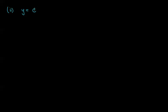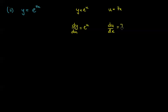Let's look at something where the power of the exponential is a little bit more complicated. What if we had y equals e to the power of 7x? Using the chain rule, this is effectively a composite function. Let u equal 7x, then y equals e to the power of u. dy by du equals e to the power of u, and du by dx equals 7. Multiplying these two, dy by dx equals 7 times e to the power of u, which replacing u gives 7e to the power of 7x.